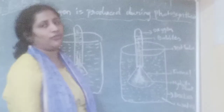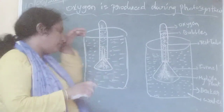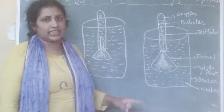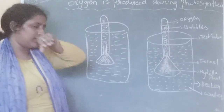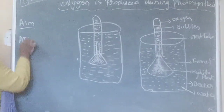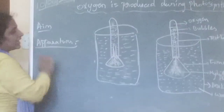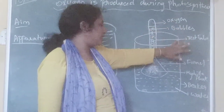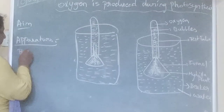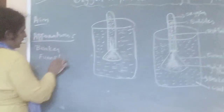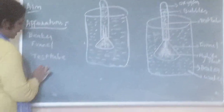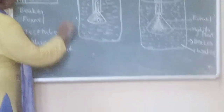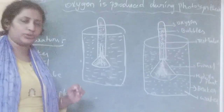To show that oxygen is produced during photosynthesis, you need the following apparatus: beaker, water, hydrilla plant, funnel, and test tube. These are the apparatus needed to do the experiment.